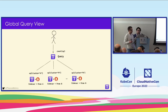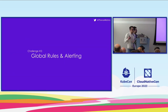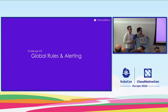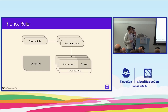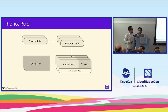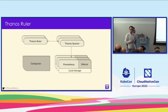By extension, having this global view over the data means we can also have global alerting and global rule recording. For example, if we want something like the global error rate across multiple environments, or we have an SLO for the P90 latency, we can do that with something called the Thanos ruler. We pull out the rule engine component from Prometheus, reuse a lot of its code, package it into the Thanos ruler, and connect the ruler to the querier.